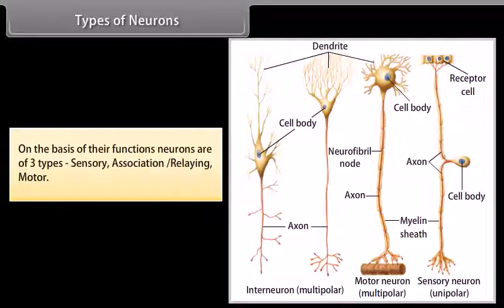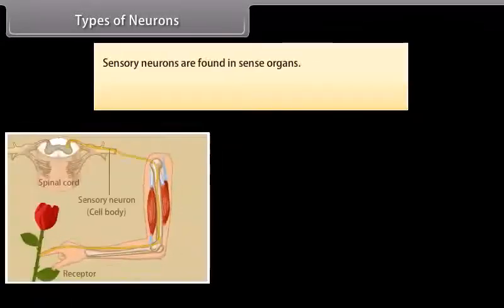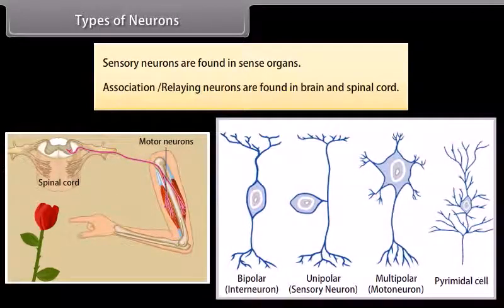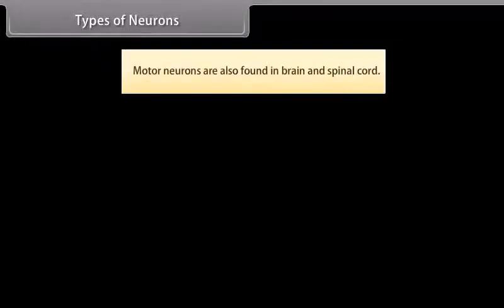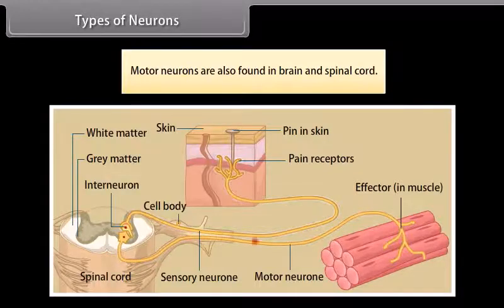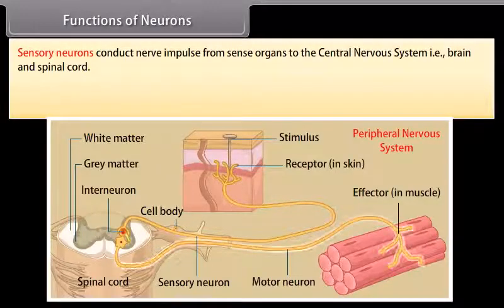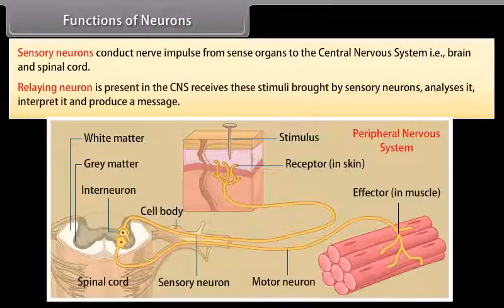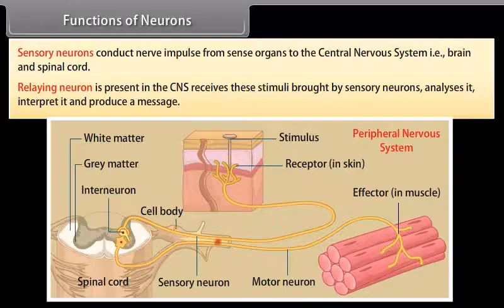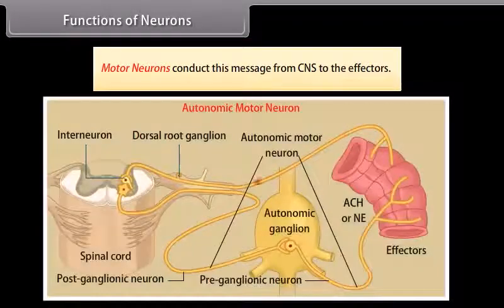On the basis of their functions, neurons are of three types: sensory, association/relaying, and motor. Sensory neurons are found in sense organs. Association/relaying neurons are found in brain and spinal cord. Motor neurons are also found in brain and spinal cord. Sensory neurons conduct nerve impulses from sense organs to the central nervous system (brain and spinal cord). The relaying neuron, present in the CNS, receives stimuli brought by sensory neurons, analyzes and interprets them, and produces a message. Motor neurons conduct this message from the CNS to the effectors.